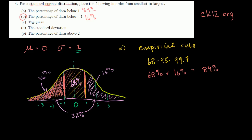Part C: they want to know the mean. That's the easiest thing — the mean of a standard normal distribution, by definition, is 0. So part C is 0. Part D: the standard deviation. By definition, the standard deviation for the standard normal distribution is 1.